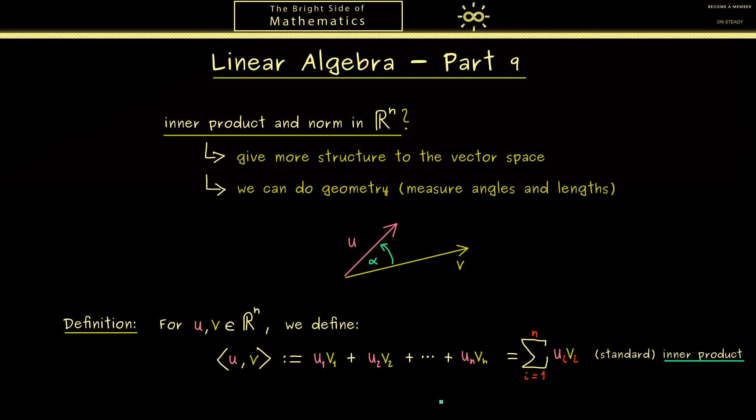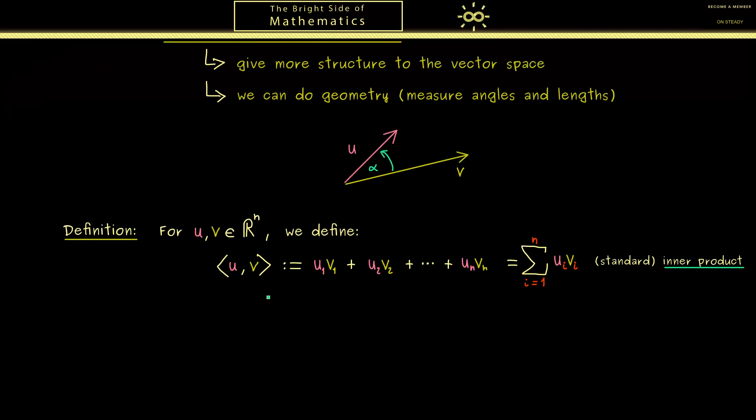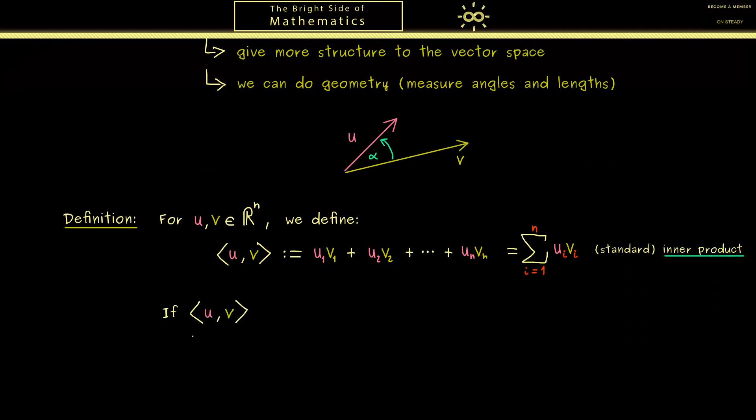Moreover we also know that the orthogonality of two vectors is related to this number. More concretely in the case that the inner product of u and v is exactly 0, we say that the two vectors u and v are orthogonal. In other words perpendicular vectors are characterized by the inner product.